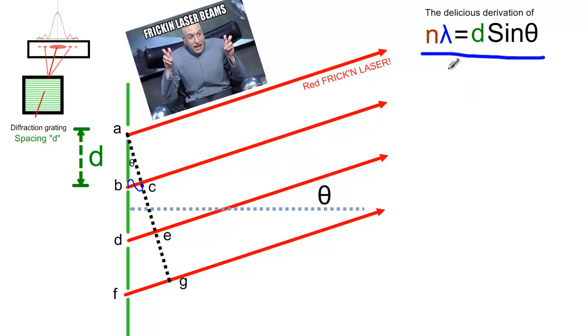To figure out where n lambda equals d sine theta comes from, you're going to need to make some constructive interference between some red freaking lasers.